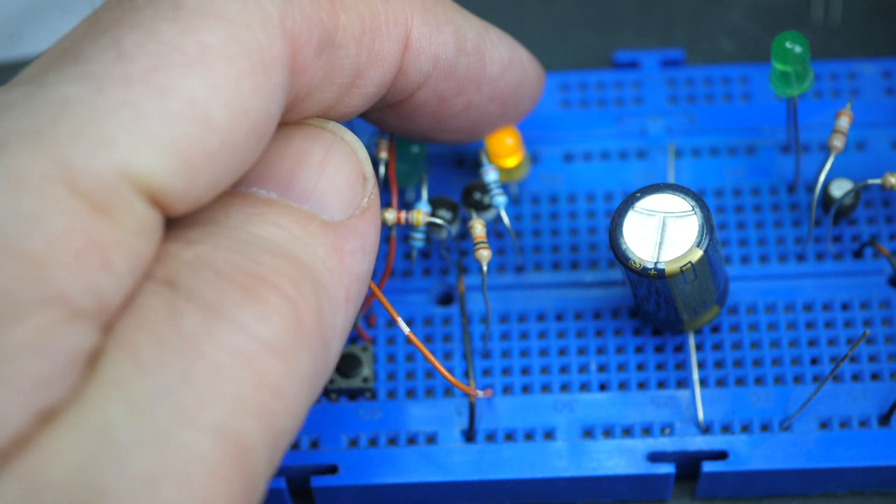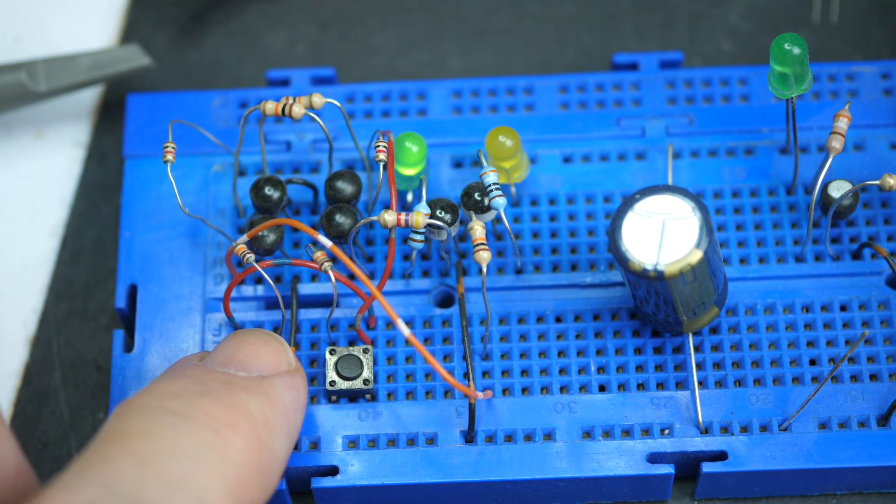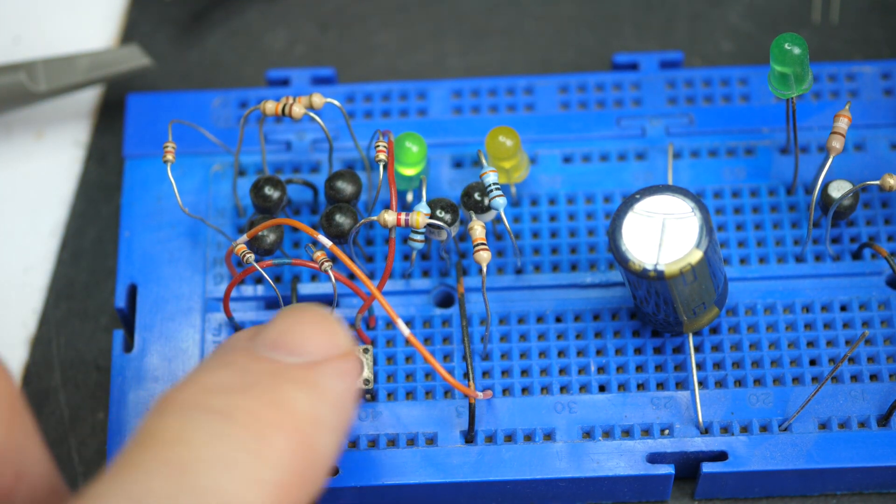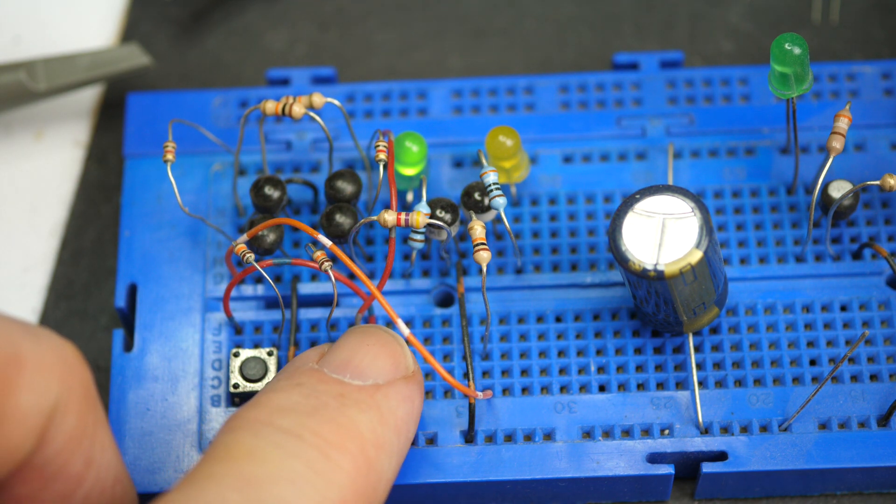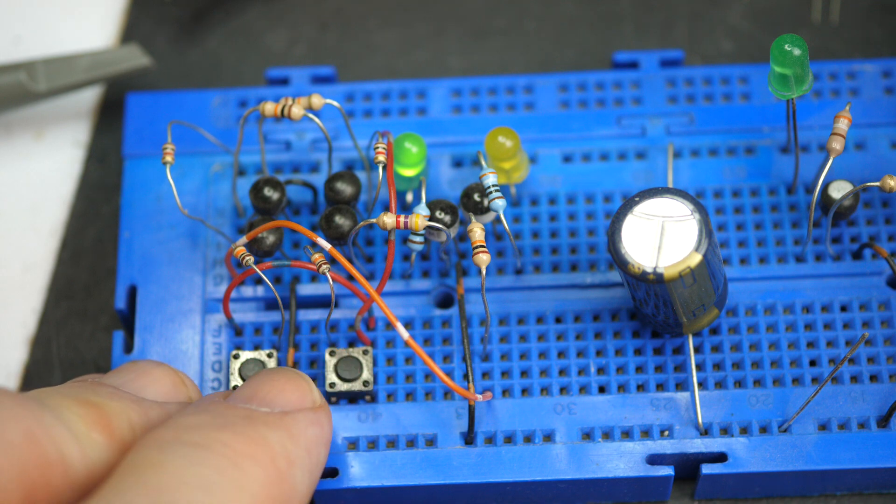You can see that one of the LEDs, the other one is on, and the green one is off. If I push the button over here, the green one comes on and the other one goes off. This is a bistable, or a latch. A set-reset latch, or flip-flop.